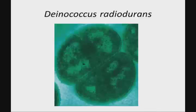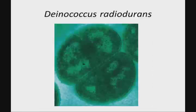Prokaryotes can live just about anywhere and survive extreme conditions. One example is Deinococcus radiodurans, which was discovered when irradiating food to sterilize it — yet this bacteria survived. It can handle levels of radiation that would kill a human being, many times over. Studying this organism on a physiological and molecular level to understand how it accomplishes that yields information that is useful to us.